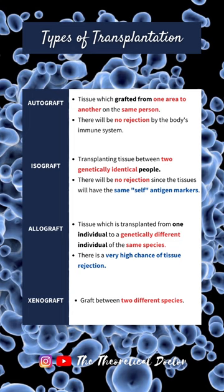In allograft, it is between two genetically different individuals of the same species, and over here there is a very high chance of tissue rejection. In xenograft, it is between two different species.